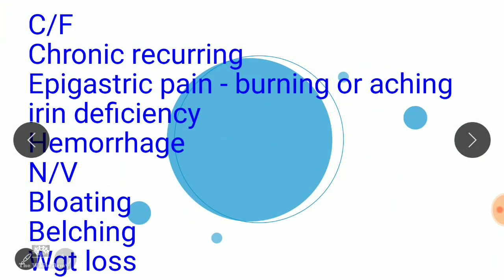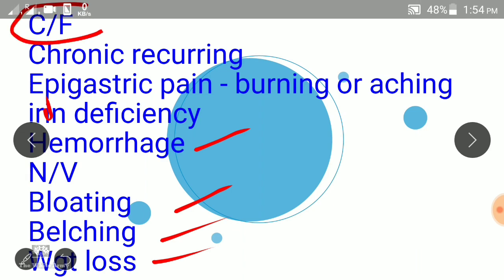In peptic ulcer disease, the patient complains of chronic recurring epigastric pain, which may be burning or aching type. Symptoms of iron deficiency may be seen, such as easy fatigability and breathlessness. Hemorrhage, nausea, vomiting, bloating, belching, and weight loss may also be seen. These are the clinical features in peptic ulcer disease.